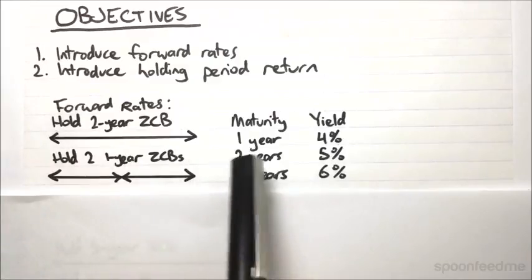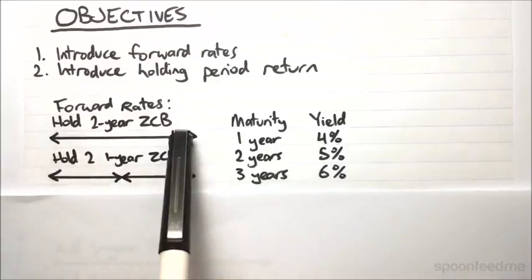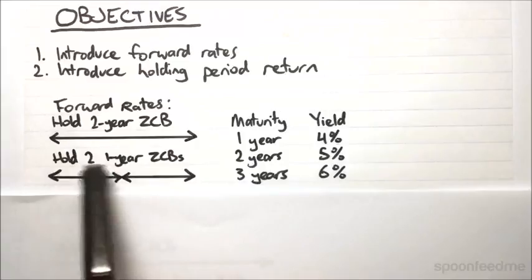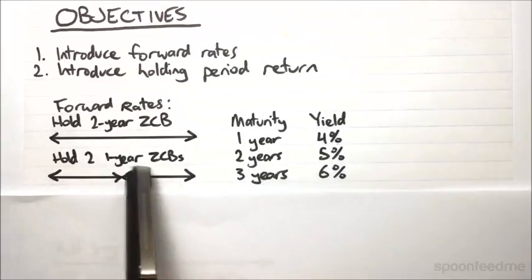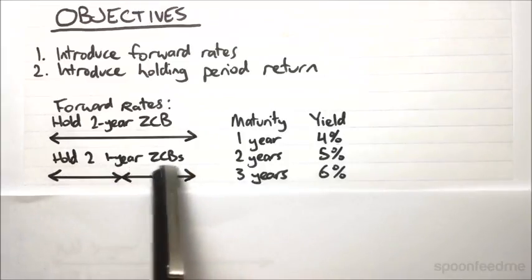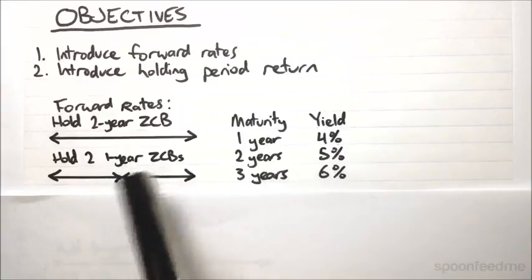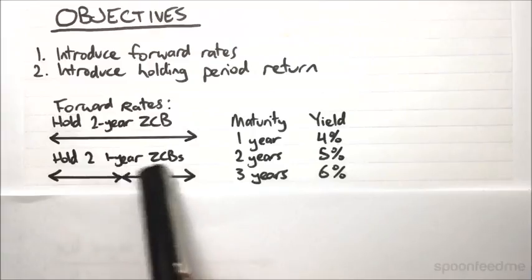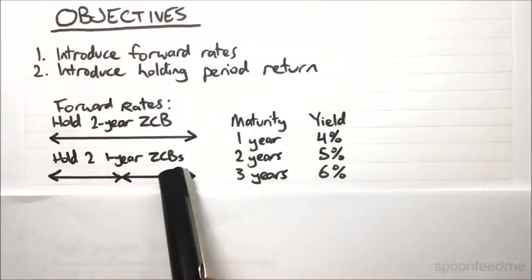So we know the yield on the two-year zero coupon bond, and we know the yield on this one-year zero coupon bond at the beginning. But the yield on this future zero coupon bond is unknown because yields change over time, and in one year's time, we don't know what the yield is going to be.